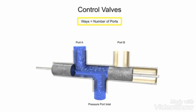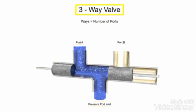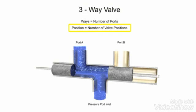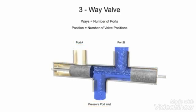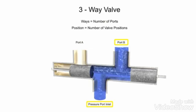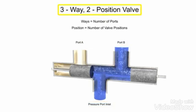A way refers to the number of active porting connections called ports. This valve has three ports, so it is a three-way valve. The term position refers to the number of discrete operating positions of the internal valve element. For this spool valve, one position allows fluid to flow from the inlet to port A, and a second position allows fluid to flow from the inlet to port B. Therefore, this is a two-position valve.